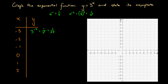What about y equals 3 to the power of minus 2? Here we've got x equals minus 2, so 3 to the power of minus 2. By the same index law relationship, we're going to have 1 over 3 to the power of 2. 3 times 3 is 9, so 1 over 3 squared is going to be equal to 1 over 9.